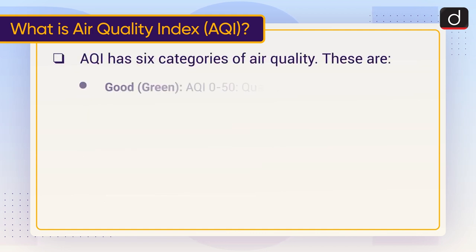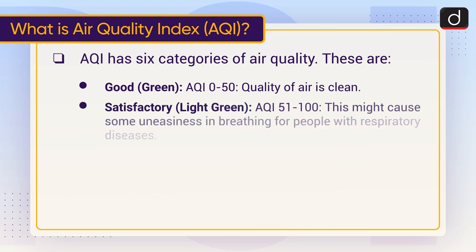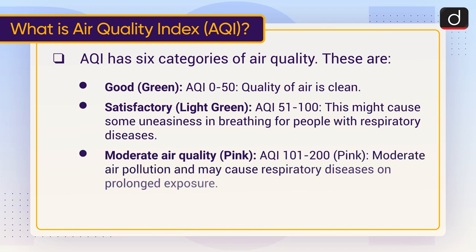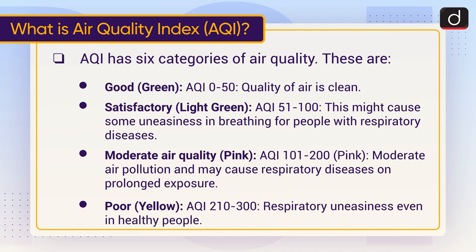AQI has six categories of air quality. The first is Good (green), AQI 0–50: air quality is clean. The second is Satisfactory (light green), AQI 51–100: this might cause some uneasiness in breathing for people with respiratory diseases. The third is Moderate, AQI 101–200: moderate air pollution that may cause respiratory diseases on prolonged exposure.